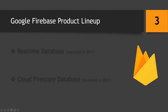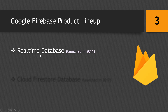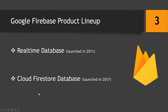Moving forward, we have the Google Firebase product lineup. The lineup consists of the Real-time Database, which was the original product of Firebase — it was launched in 2011 when Firebase was a separate company. In 2014, Google acquired Firebase, so now it's called Google Firebase. Then Google released the Cloud Firestore database in 2017, and it looked like a successor of the Real-time Database.